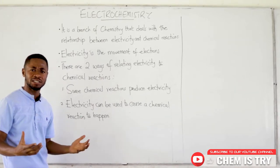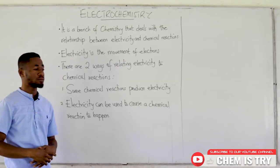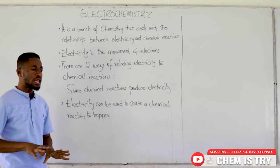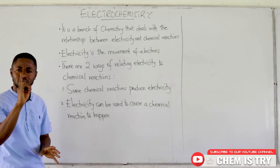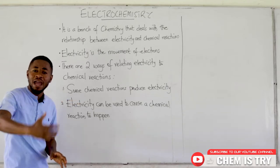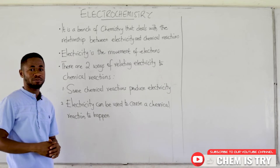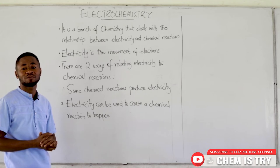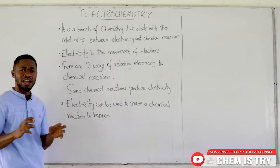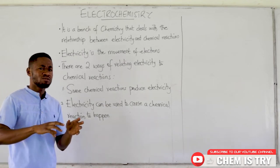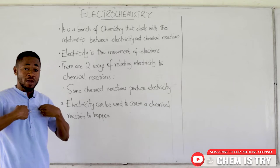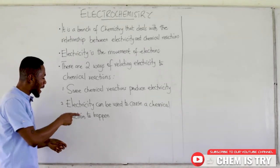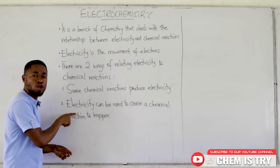There are two ways of relating electricity to chemical reactions. The first way: some chemical reactions on their own involve the movement of electrons, and hence those reactions will end up producing electricity. So here, the reaction itself is going to create electricity for us. Or there's a second way — sometimes there's no reaction, no movement of electrons whatsoever, but we would want to cause a chemical reaction to happen. And how do we do that?